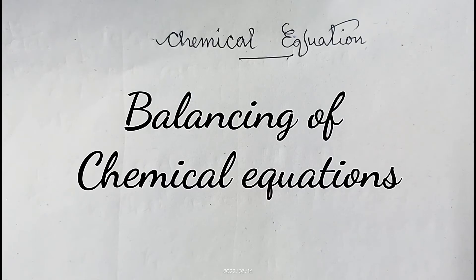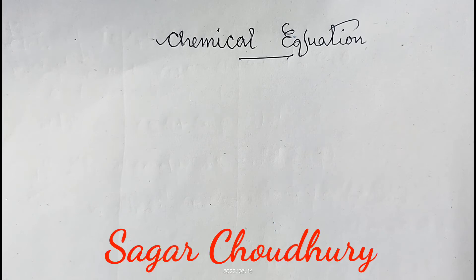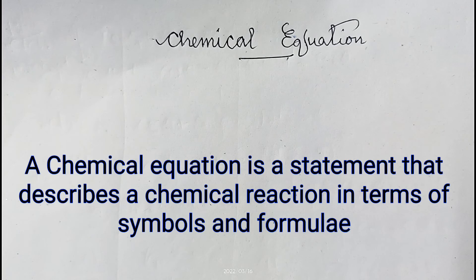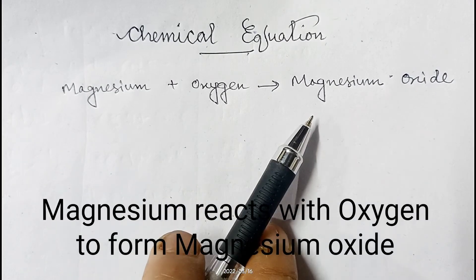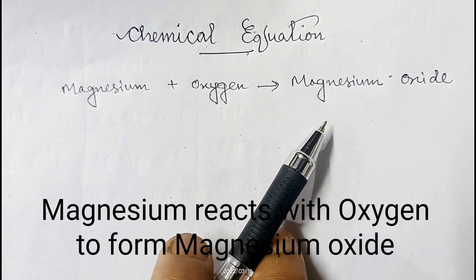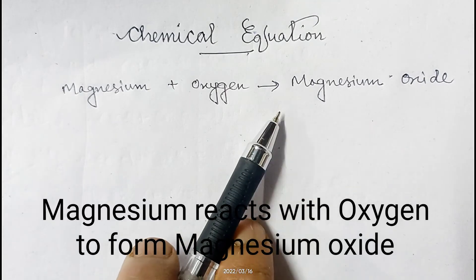Hello students. In this video I am going to discuss chemical equations and how to balance them. A chemical equation is a statement that describes a chemical reaction in terms of symbols and formulae. For example, when magnesium reacts with oxygen it forms magnesium oxide.